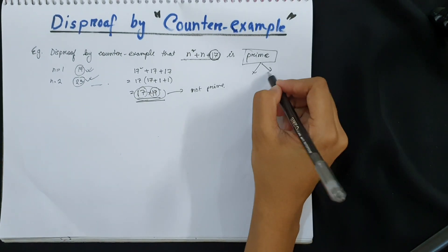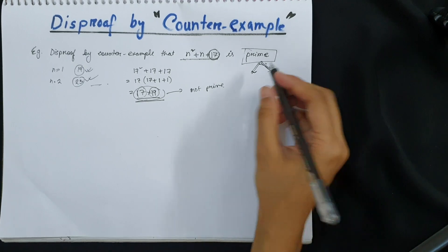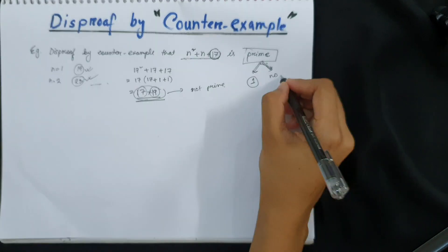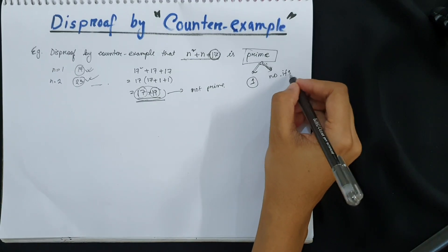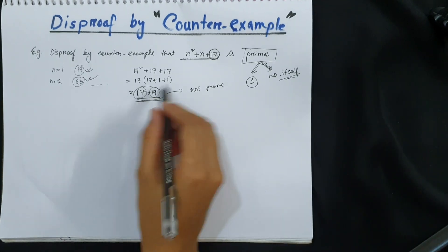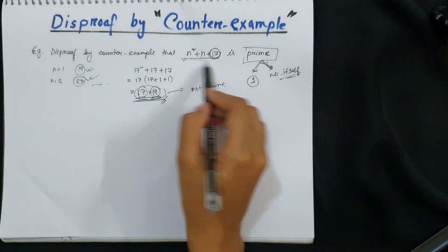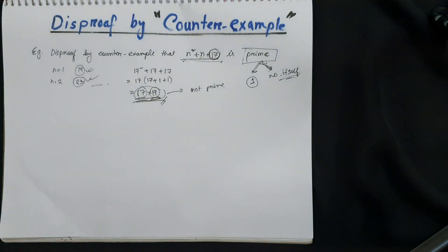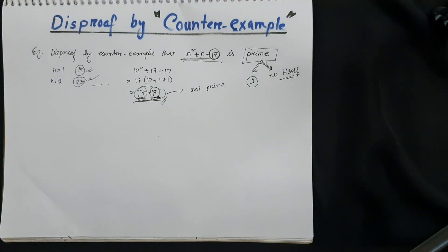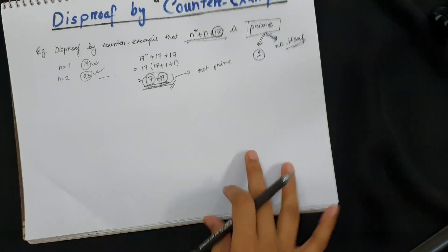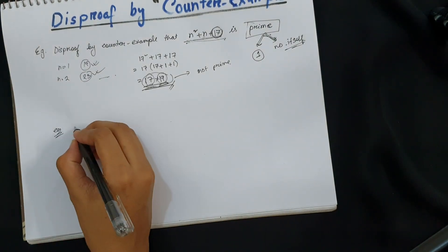Because for a number to be prime, it has to be a multiple of 1 and the number itself. But since this is a multiple of 17 and 19, the result is not a prime number. So counter-examples questions vary, for example, they can also ask if...